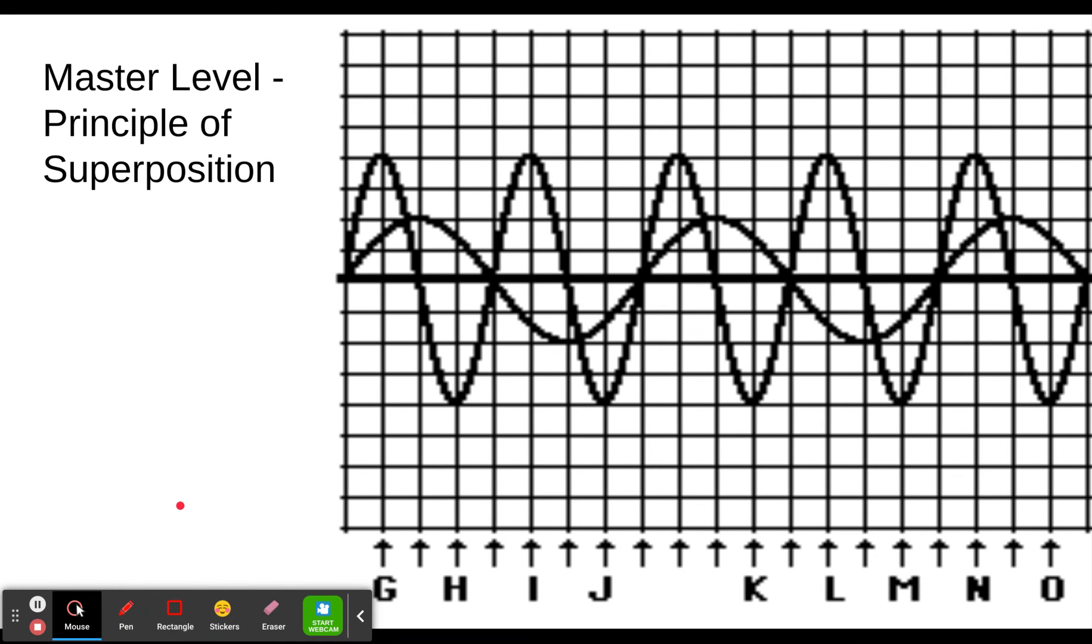There are two levels: master level, which talks about the principal position and has you calculate the displacement at a given point in the wave, and each box is 0.1 meters. Let's write these in real quick. This line's 0.1, this one's 0.2, this one's 0.3, this one's 0.4. This is negative 0.1, negative 0.2, negative 0.3, and negative 0.4.